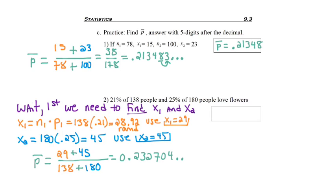I'm saying this so wrong. Anyways, when we divide, we'll get .232704. Rounding on the fifth digit will give us P-bar as .23270.